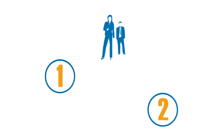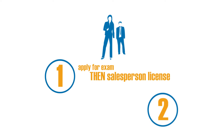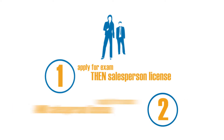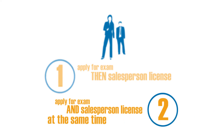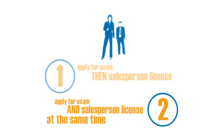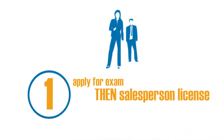There are two ways in which you can apply to obtain a real estate salesperson license: one, apply for the salesperson exam and then the salesperson license; or two, apply for the salesperson exam and salesperson license at the same time.